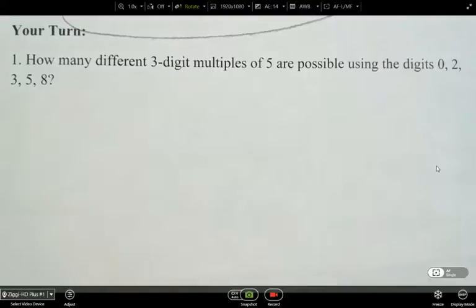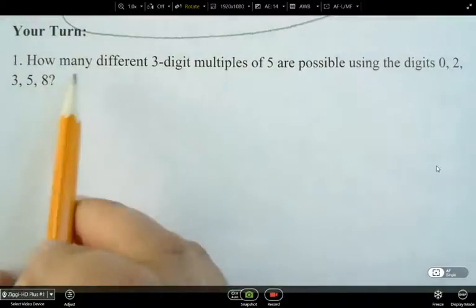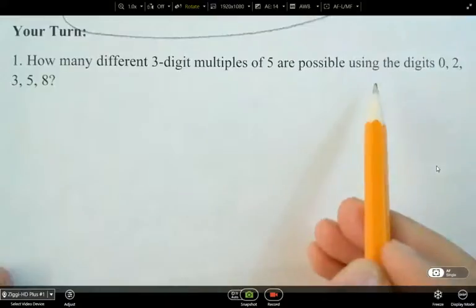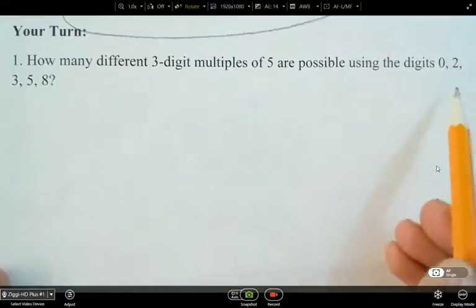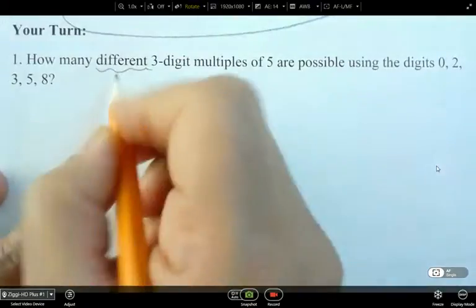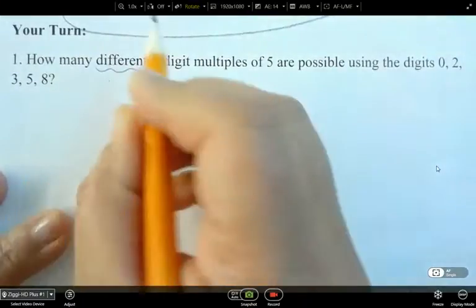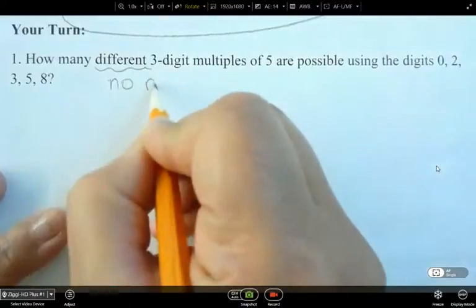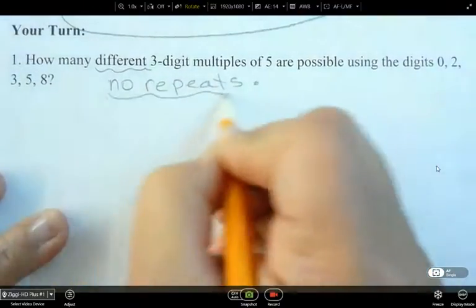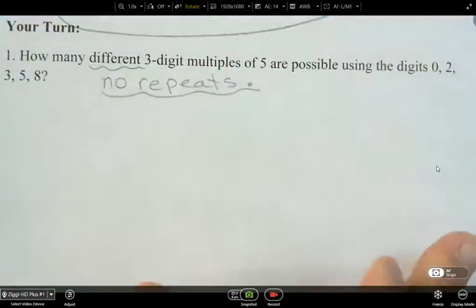Okay, so let's finish up those questions. We're gonna continue with this one here. It says, how many different three-digit multiples of 5 are possible using the digits 0, 2, 3, 5, and 8? Now, here, when we're doing these questions, no repeats. Once we've used a digit, it's gone. We can't use it anymore. So all of these questions, even if it doesn't say no repeats, it's assuming that there are no repeats of digits.